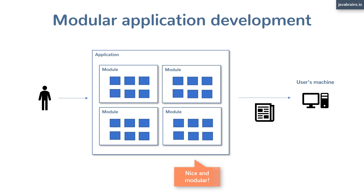But what you're doing is composing them to form one application. When you build and deploy it, all those small pieces get smushed together into one giant ball of distributable — that is your final application build. Take the example of your text editor installer or Microsoft Word installer. No matter how the developers have modularized their source code, the final distributable, the final executable, is just one thing with everything smushed together.